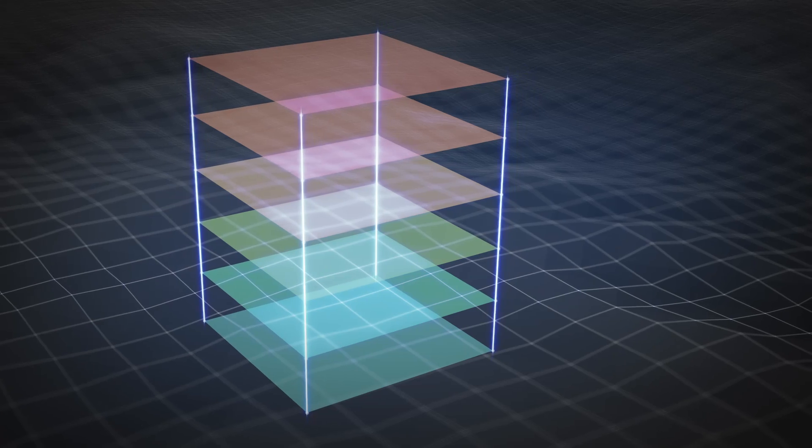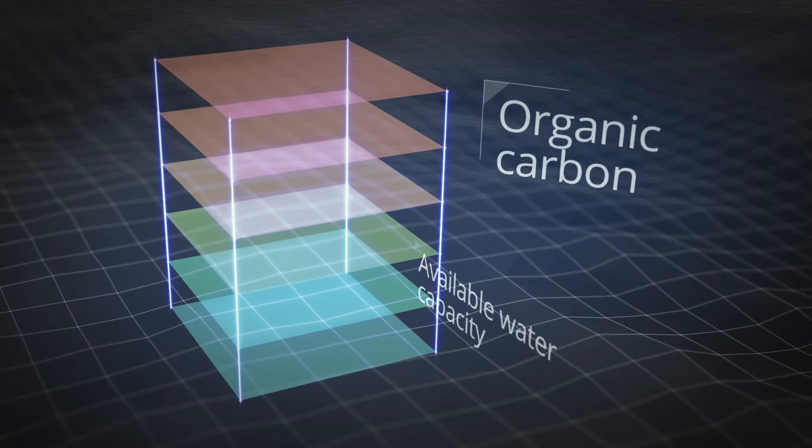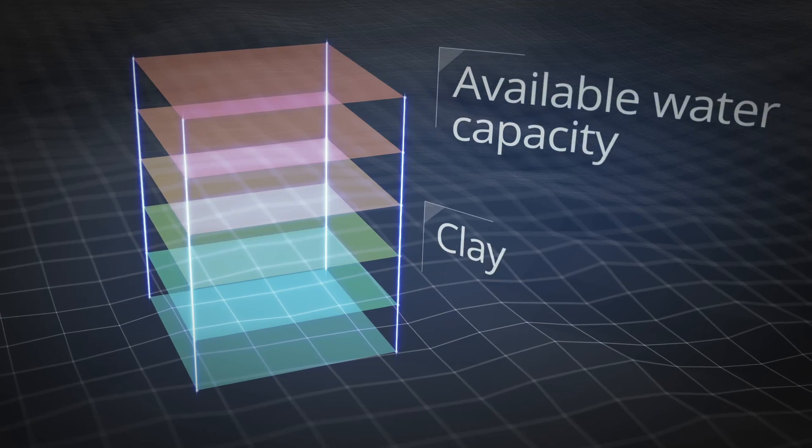Dozens of attributes are included, such as organic carbon, available water capacity, clay, pH, nutrients and landscape features.